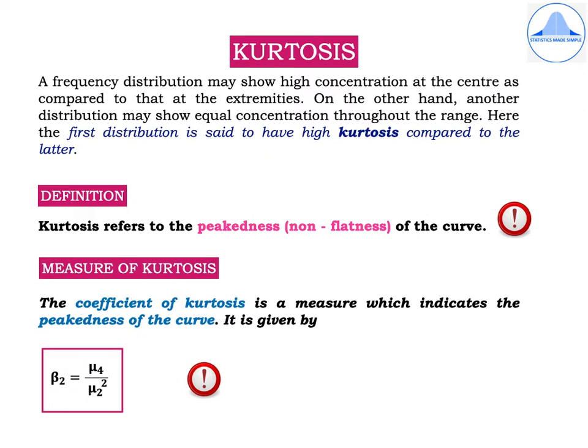Kurtosis refers to the peakedness or non-flatness of the curve. The coefficient of kurtosis is a measure which indicates the peakedness of the curve, and it is given by β2 equal to μ4 divided by μ2 square, where μ2 is the second central moment — that is, the variance — and μ4 is the fourth central moment.